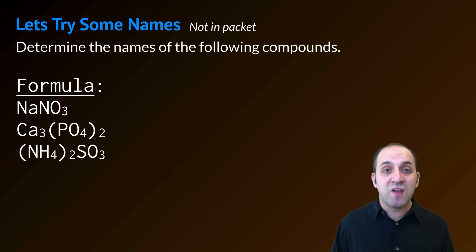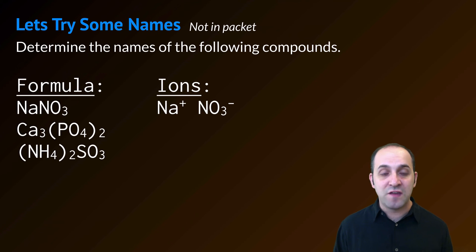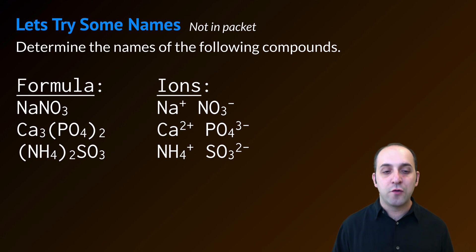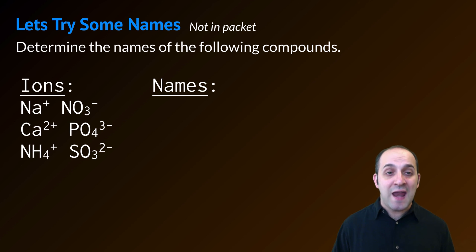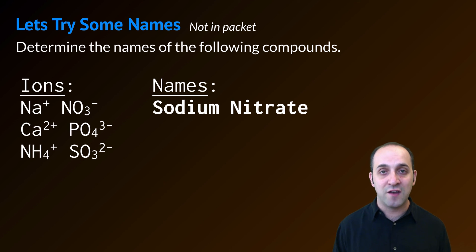Let's try some examples. Determine the names of the following compounds — pause the video and try it on your own, and then when you're ready, let's go through it together. I'm going to figure out the ions first, the same way I did with binary compounds. NaNO3 is made out of Na+ and NO3 minus. Ca3(PO4)2 is made out of Ca2+ and PO4 3 minus. And (NH4)2SO3 is made out of NH4+ and SO3 2 minus.